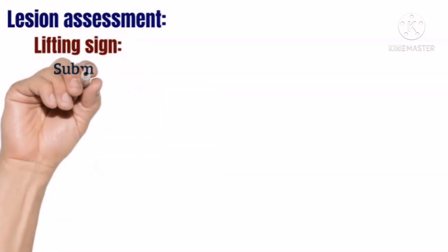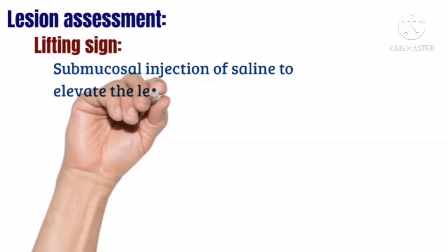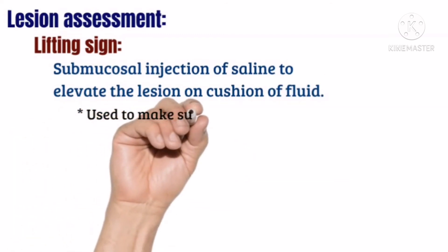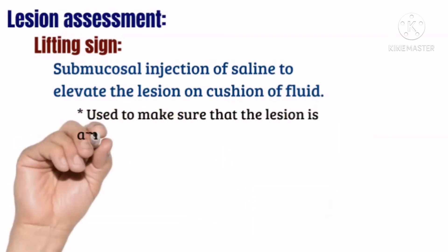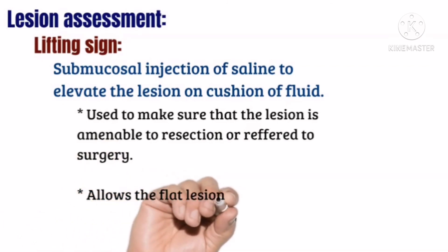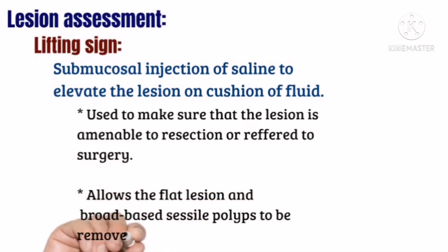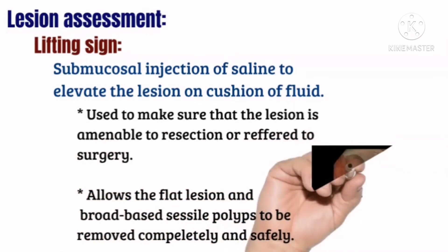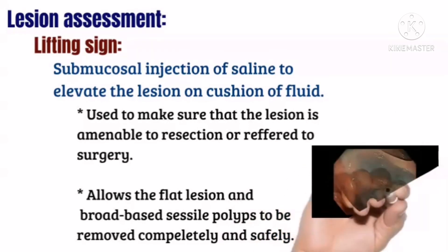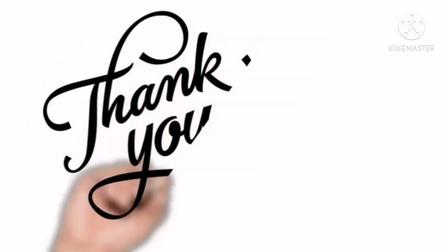The lifting sign involves submucosal injection of saline to elevate the lesion on cushion of fluid. It is used to make sure that the lesion is amenable to resection or should be referred to surgery. It allows flat lesions and broad-based sessile lesions to be removed completely and safely.